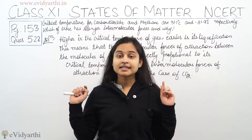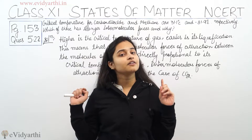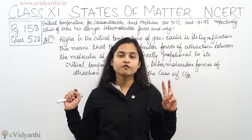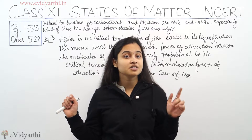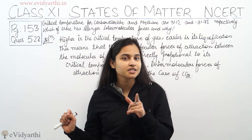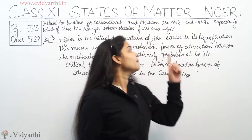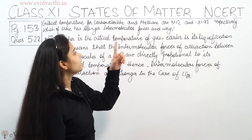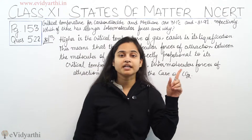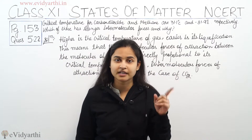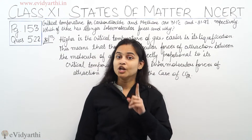And since the critical temperature of carbon dioxide is greater than that of methane — because the critical temperature of carbon dioxide is 31.1 degree Celsius and that of methane is minus 81.9 degree Celsius.